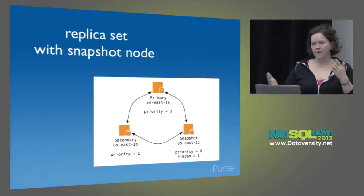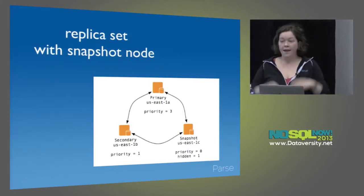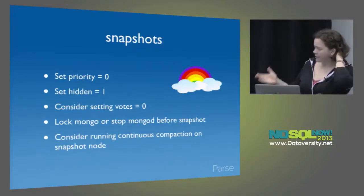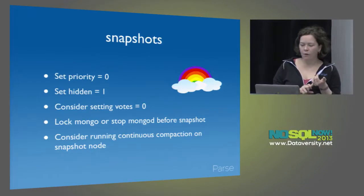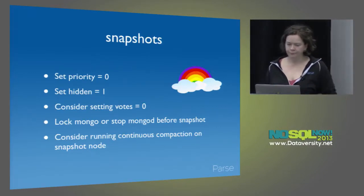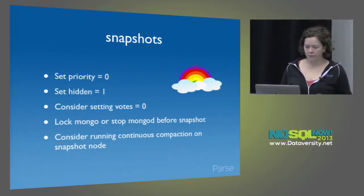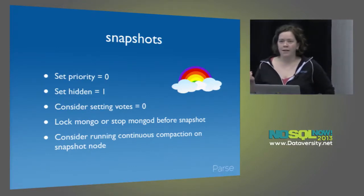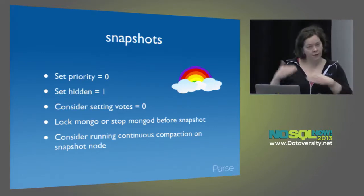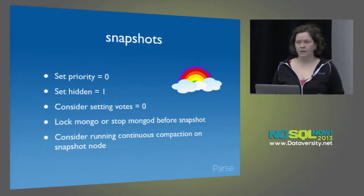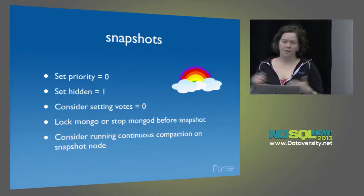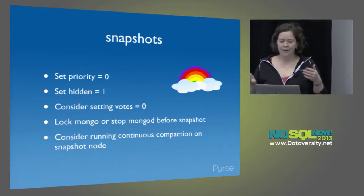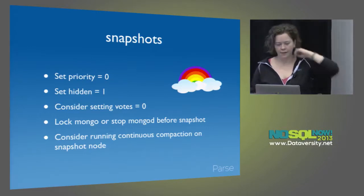Now you have one node that does nothing but snapshots and maybe utility functions like running compactions. You still have high availability with your other two nodes. Be sure to lock Mongo and sync the file system, or stop Mongo completely, before you snapshot. Set priority to zero, hidden to one, and possibly run continuous compaction. You should snapshot really often — we snapshot every two hours. EBS snapshot does a differential backup, so your first snapshot may take a long time, but after that they'll be pretty fast. Amazon only charges you on the differential blocks, so storing a lot of snapshots is not as expensive as you might think.